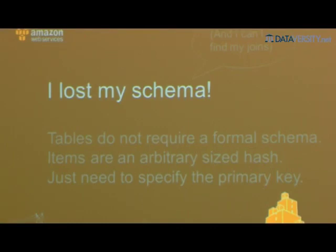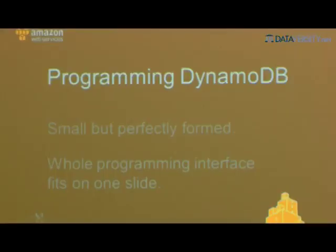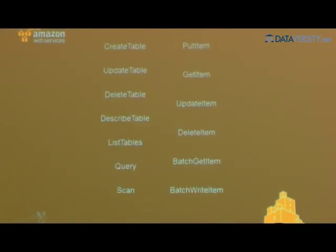No schema required — tables don't need a formal schema. Items are an arbitrary-sized hash. The whole programming interface can be described in one slide: 13 API calls. You just need to specify what the primary key is and whether it's a hash or hash-and-range.